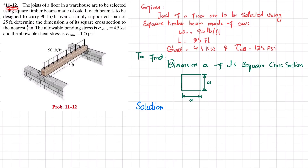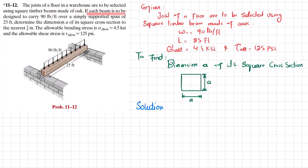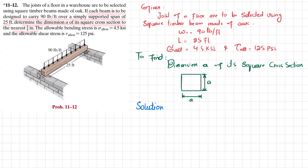Welcome back, problem 11-12. The statement is: the joists of a floor in a warehouse are to be selected using a square timber beam made of oak. Each beam is to be designed to carry 90 pounds per foot over a simply supported span of 25 feet. Determine the dimension 'a' of its square cross section to the nearest quarter inch. The allowable bending stress is 4.5 ksi and allowable shearing stress is 125 psi.